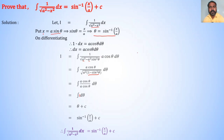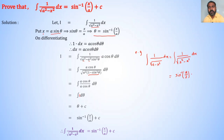Therefore ∫1/√(a²−x²)dx = sin⁻¹(x/a) + c. For example, ∫1/√(4−x²)dx = ∫1/√(2²−x²)dx. Using the formula with a = 2, the answer is sin⁻¹(x/2) + c.